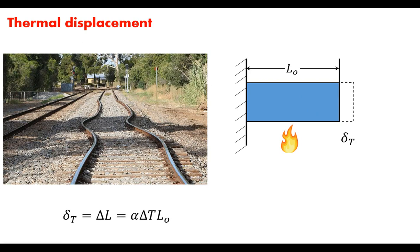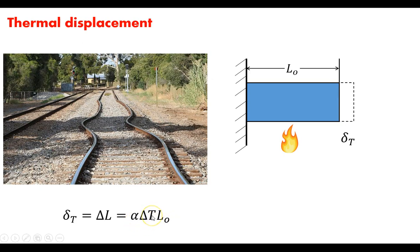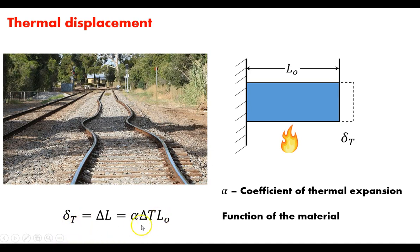The equation for thermal displacement is: delta L equals alpha times delta T times the original length, where delta T is the change in temperature and alpha is the coefficient of thermal expansion, which is a function of the material. Just like with modulus of elasticity, if this had been aluminum, brass, copper, or steel, we would have seen a completely different displacement because they all have a unique alpha, just like they all have a unique modulus of elasticity.